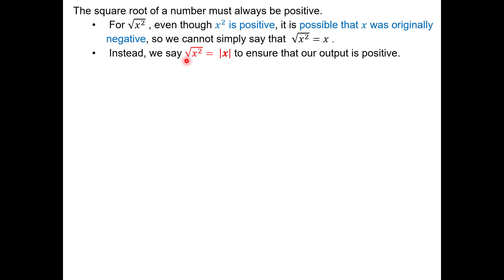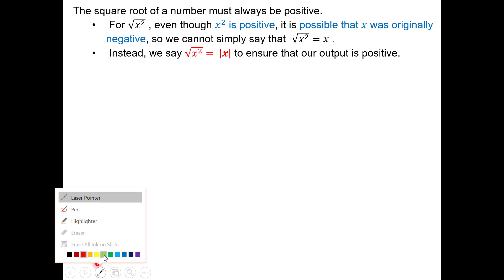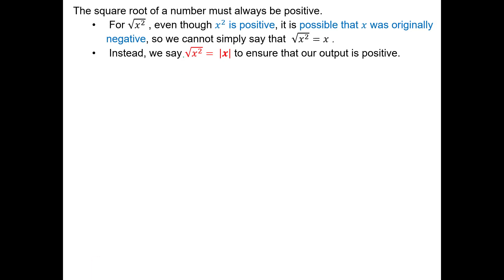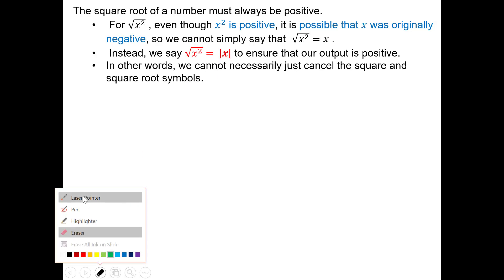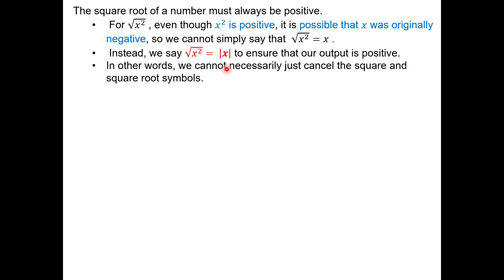You can think of the square root as undoing the square because of what the symbol represents — it's asking what quantity squared gives you the inside. What squared gives you x squared? Well, the answer is x. We just have to make sure it's positive, so we put absolute value bars. We just can't go straight to saying they cancel because we have to consider the absolute value of the answer.